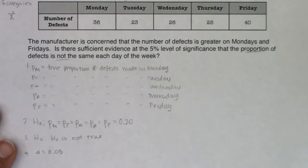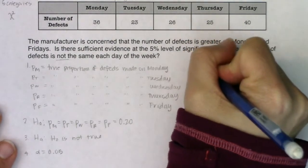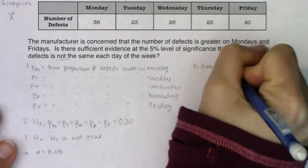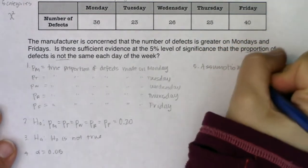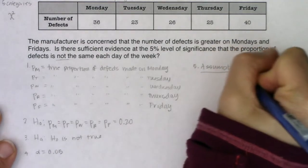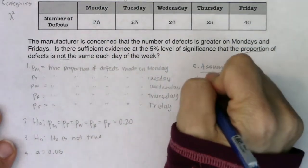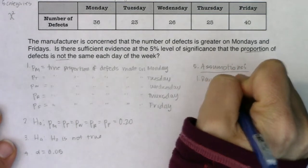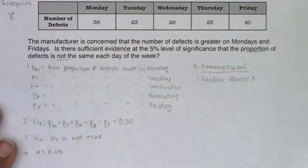For assumptions: I need a random sample. Looking through the problem, there's no mention of a random sample — not the deal breaker, so I'll put an X by it. The deal breaker is calculating all expected counts — every NP must be at least 5.